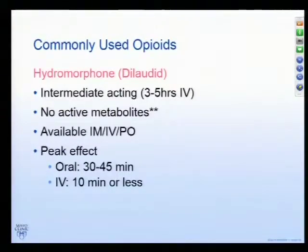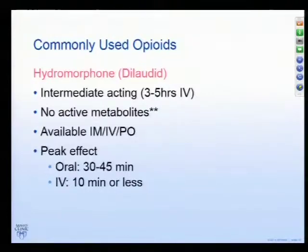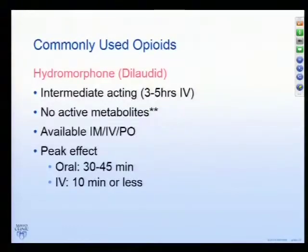Hydromorphone or Dilaudid is one I'm using more and more. It's intermediate-acting with a similar peak effect to morphine. With regard to analgesic benefit, it has no active metabolites, so we frequently use it in patients with renal insufficiency. It's available in IM, IV, and PO forms. There's even a long-acting form called Exalgo, which isn't usually approved by many formularies so we don't see it much, but it's starting to make its way into the marketplace.